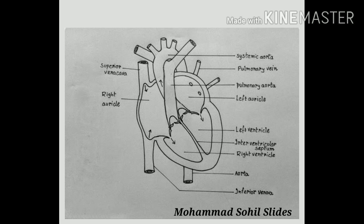The heart is divided into two parts — left and right — with the help of a septum. These two parts are again divided into chambers. The right part has two chambers and the left part has two chambers. The upper chamber of the right is the right atrium, the lower is the right ventricle. The upper chamber of the left is the left atrium, the lower is the left ventricle. The right part is divided by the tricuspid valve and the left part by the bicuspid valve. The atria are called receiving chambers and the ventricles are called pumping chambers.